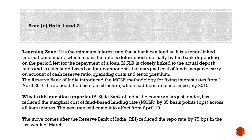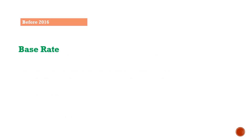MCLR, that is Marginal Cost of Funds Based Lending Rate, refers to the minimum interest rate a bank must charge for lending. It was introduced in April 2016, and before that we followed the base rate system. Banks provide loans, and MCLR and base rates are the interest rates applied to those loans.